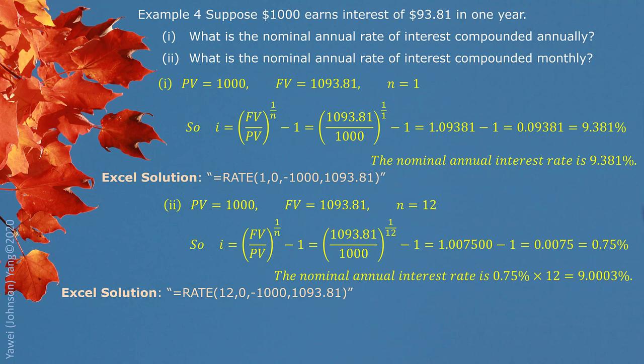This kind of situation, we call these two interest rates equivalent interest rates. 9.381% compounded annually and 9.0003% compounded monthly are equivalent. They are called equivalent interest rates. See you next time.